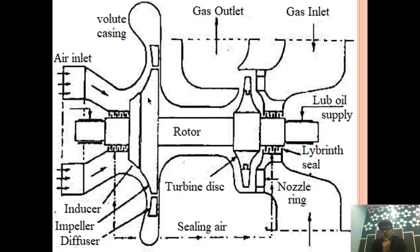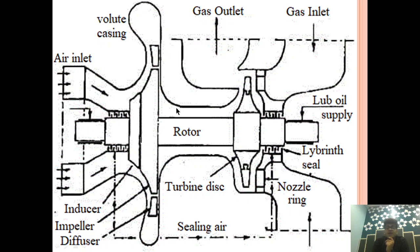To summarize: labyrinth seal is a type of seal which prevents contamination. The type of contamination prevented depends upon its placement. If placed on the gas side, it prevents gas contamination of the lubricant. If provided on the air side, it prevents contamination of air into the lubricant. And if provided between the compressor and turbine, it prevents contamination of gas into the air side.